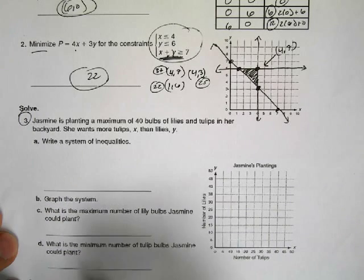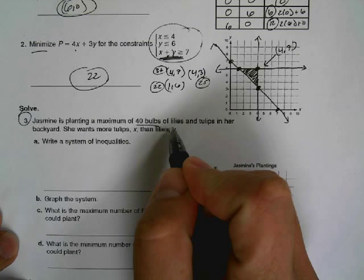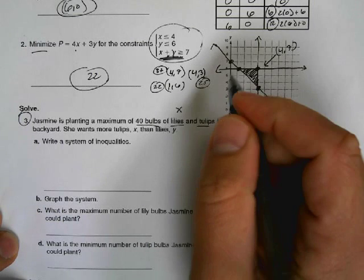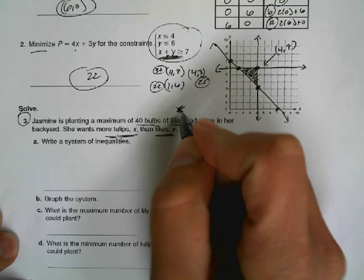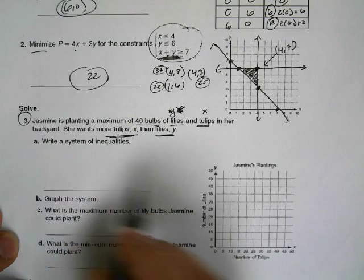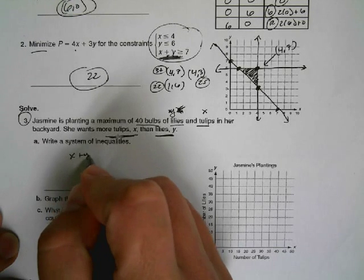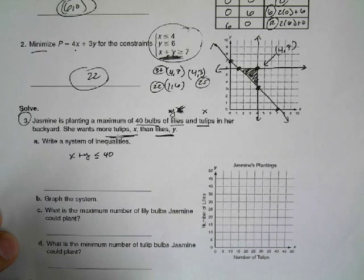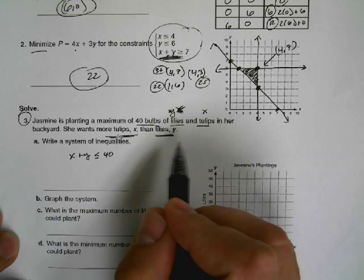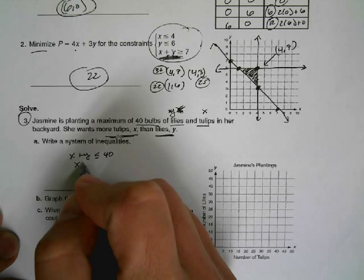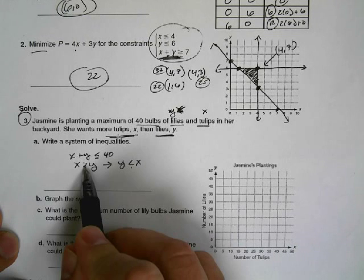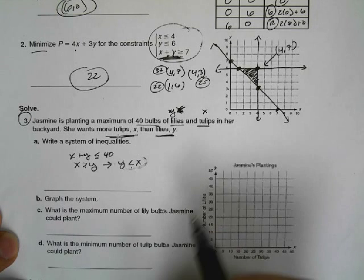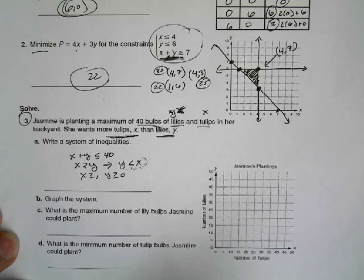Now this very last one, we're dealing with a situation where we need to write a system of inequalities. So Jasmine is planting a maximum of 40 bulbs of lilies and tulips. So I'm going to call lilies x and then, oh, scratch that. The problem is saying lilies is y and tulips is x. So we've got to read the whole problem. So this is going to be y and this is going to be x. She's planting a maximum of 40 bulbs of lilies and tulips. So I know x plus y is going to be less than or equal to 40. And I know she wants more tulips than lilies. So I know x is greater than y. And if I read this to graph the line, I'm going to actually rewrite it as y is less than x. And notice how the symbol is still pointing towards y. So this is just an easier format for me to graph. And I know we can't have negative lilies and tulips.